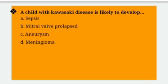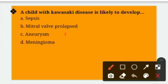A child with Kawasaki disease is likely to develop — Kawasaki disease wale child mein kya develop hota hai? Options: Sepsis, Mitral valve prolapse, Aneurysm, Meningioma. Right answer is option C — Aneurysm. A child with Kawasaki disease is likely to develop aneurysm formation — ballooning of an area in an artery.